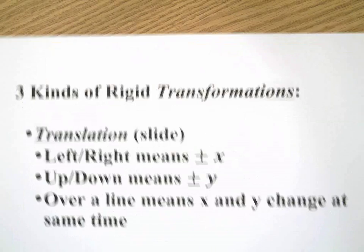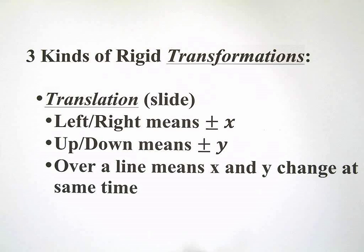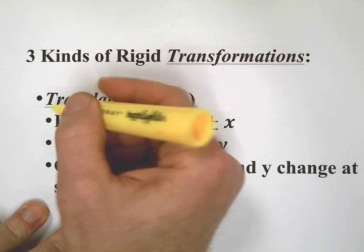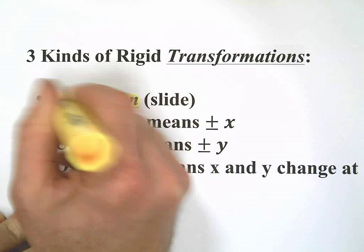Let's check out what we have here. There are three kinds of rigid transformations. Three kinds of rigid transformations. The first one we're going to talk about today is called a translation. Translation.